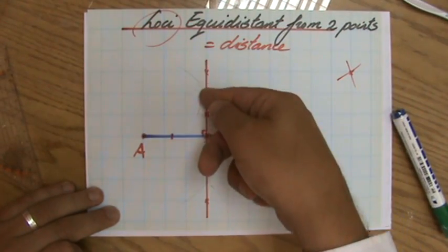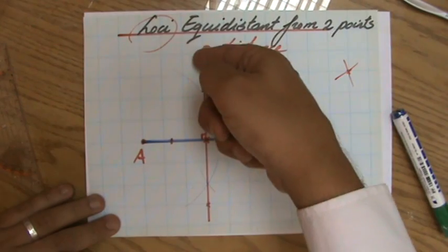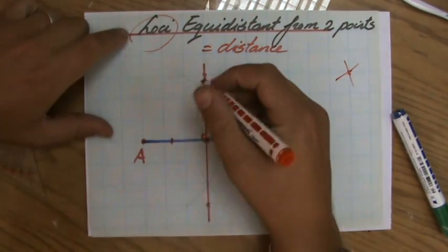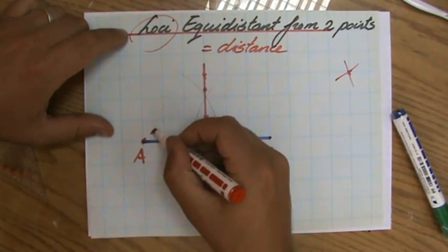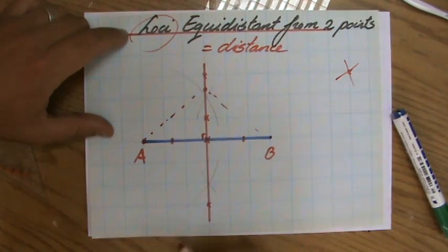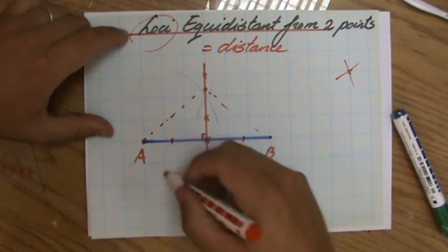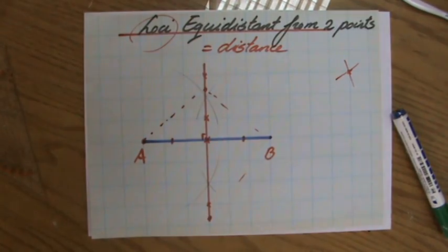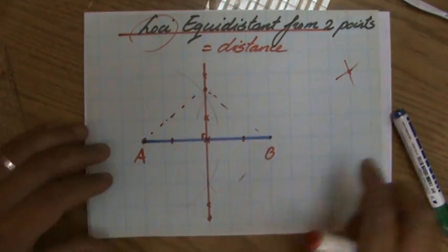All the points on this line bisector, all the points on this perpendicular bisector, are equidistant to A and to B. Over here, it's going to be the same length to B as it is to A. So the line bisector, fantastic.